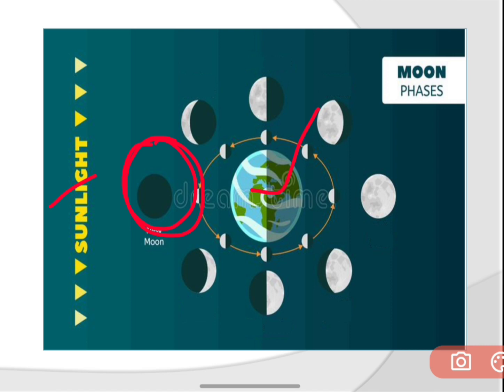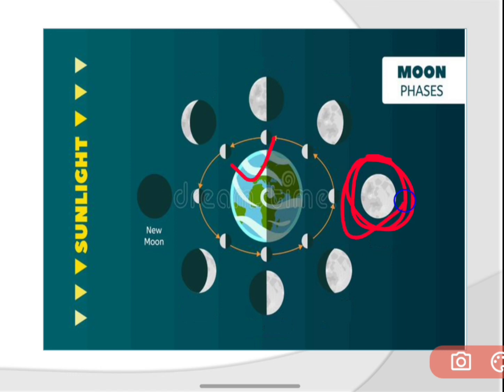When earth is in between the sun and the moon, then you can see the full moon. That's why we call that night a full moon night or full moon day.